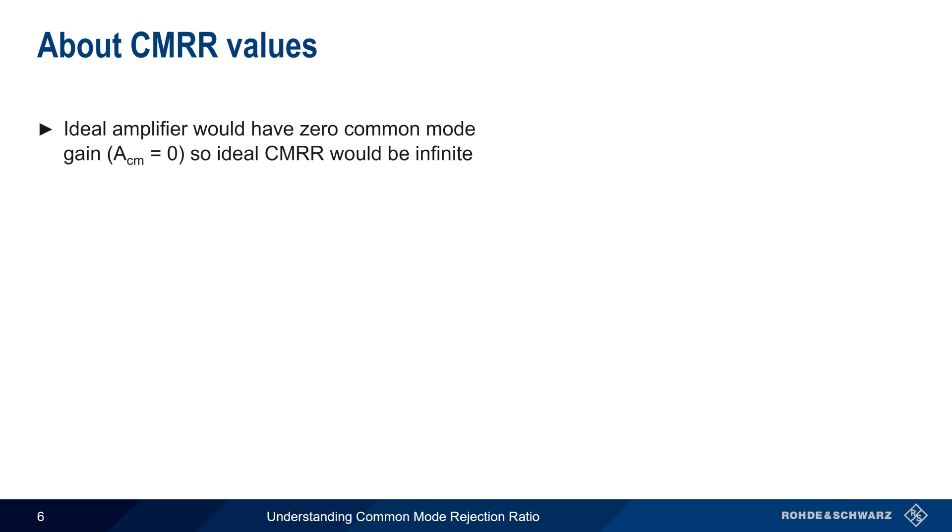In an ideal differential amplifier, common mode signals would be completely rejected. That is, the common mode gain would be zero, and thus common mode rejection ratio would be infinite. This doesn't occur in the real world, but generally speaking, larger CMRR values indicate greater rejection of common mode signals, and thus are desirable.